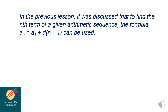In the previous lesson, it was discussed that to find the n-th term of a given arithmetic sequence, the formula a sub n equals a sub 1 plus d times (n minus 1) can be used, where a sub n is the n-th term, a sub 1 is the first term, d is the common difference, and n is the number of terms.